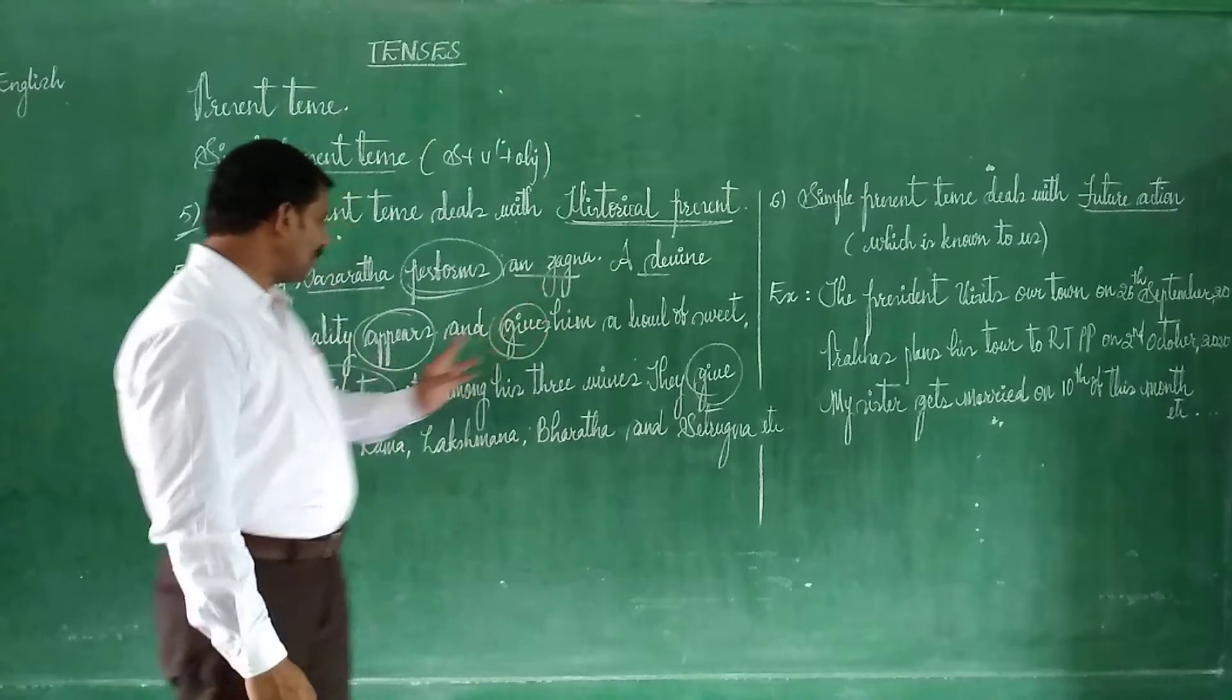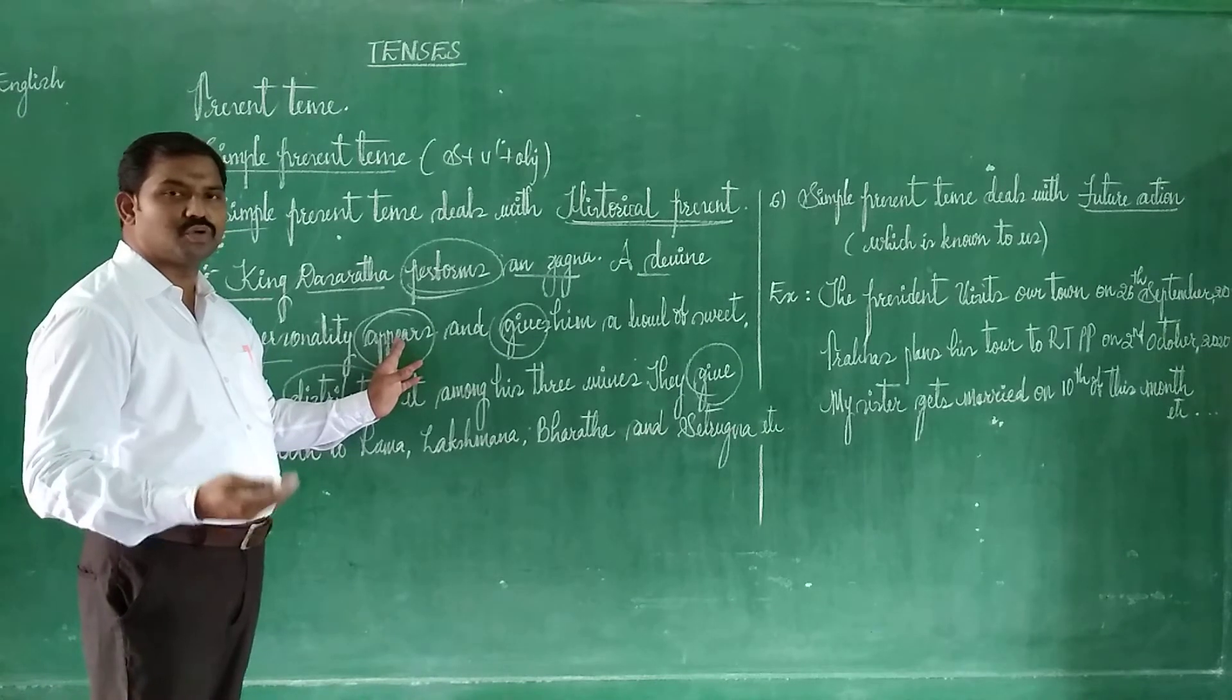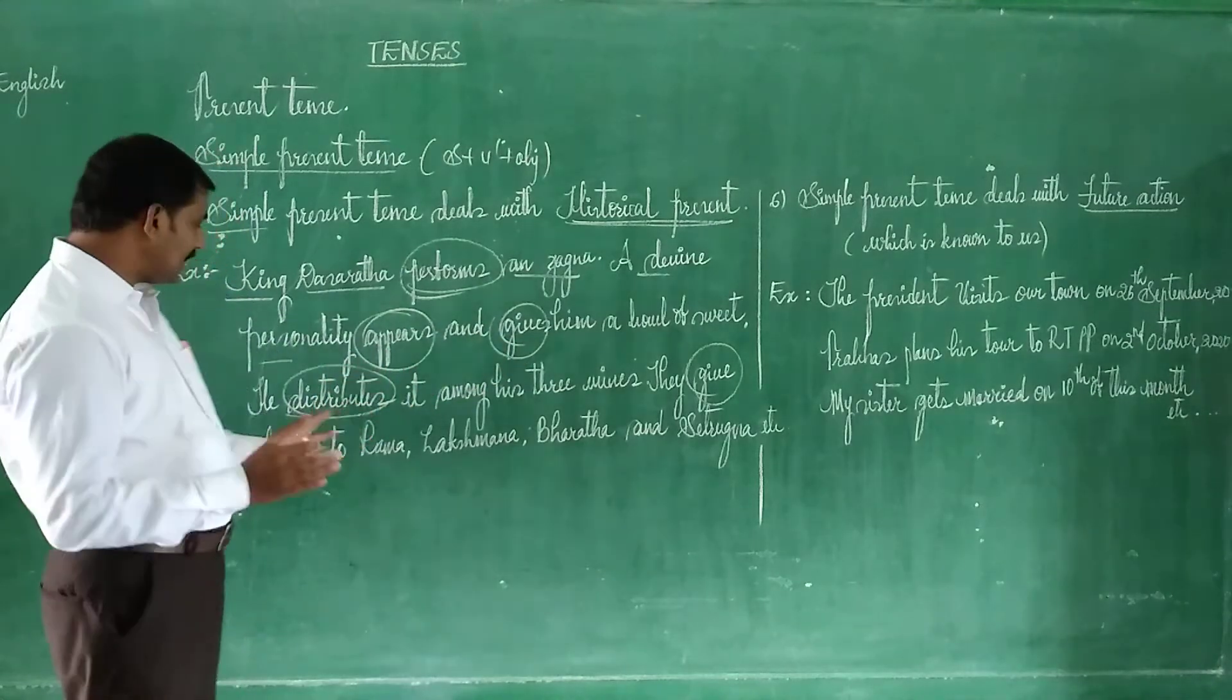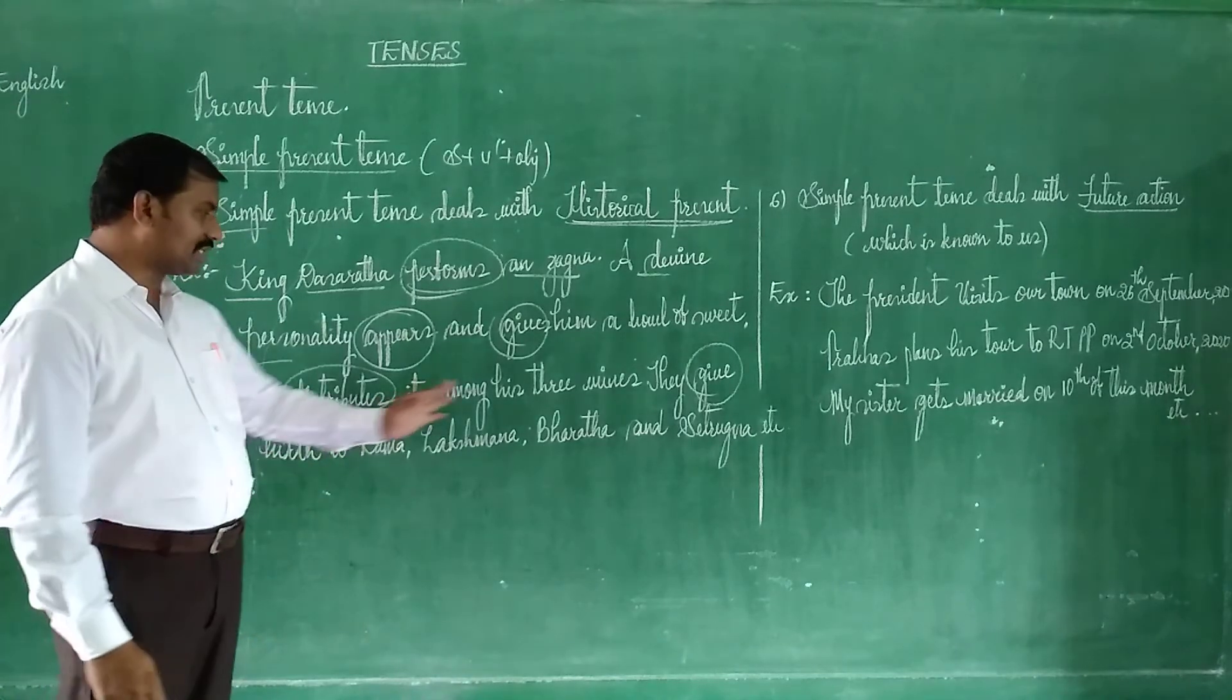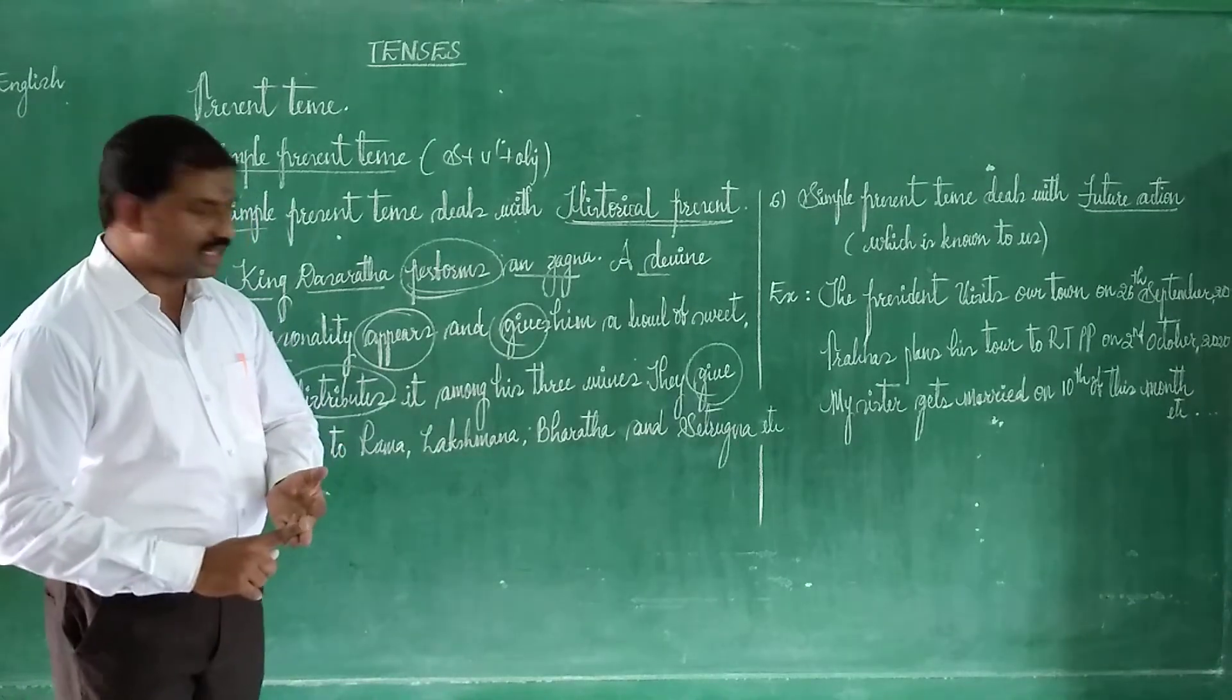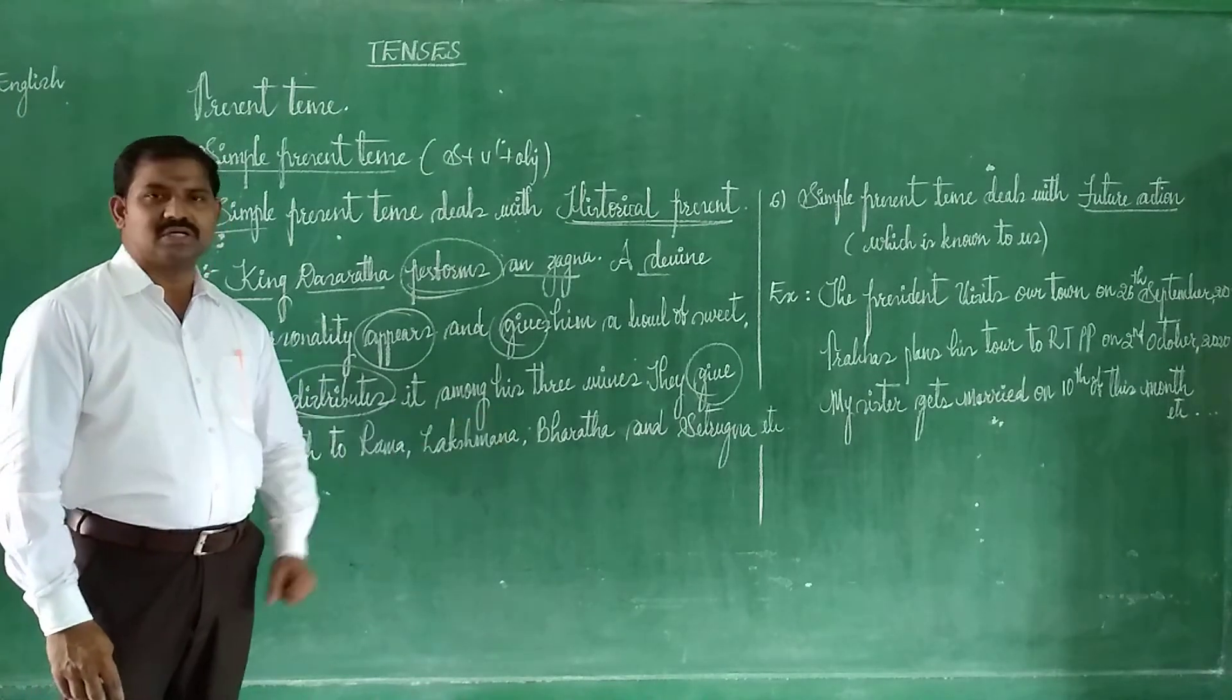A divine personality appears. Maybe in our old tradition, it is believed that a divine personality appears when you do yajna or yaga or something like that. So he gives him a bowl of payasam and he tells him to distribute among these three wives. So he then distributes his payasam among these three wives, like Kausalya, Sumitra and Kaikeyi. So they give birth to four children, and they are nothing but called Rama, Lakshmana, Bharata etc.